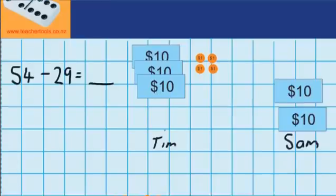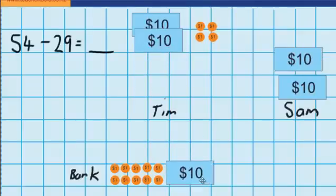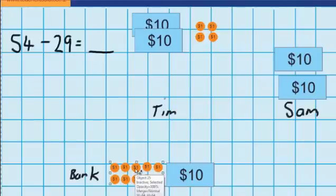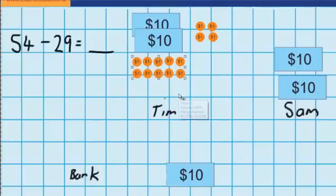Well what I can do is go down to the bank. I've got the bank down here and I'm gonna take one of these $10 notes, give that to the bank, and the bank are going to give me 10 $1 coins in exchange for that $10 note. So I'm going to move these 10 $1 coins up to here.